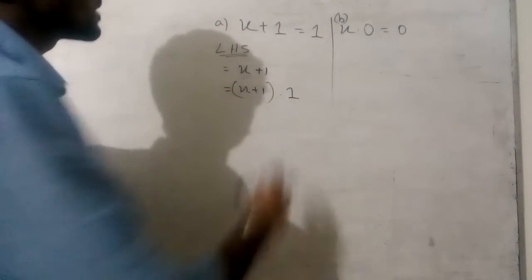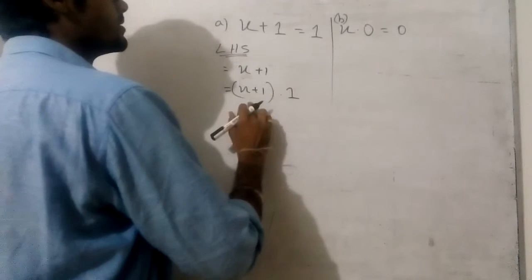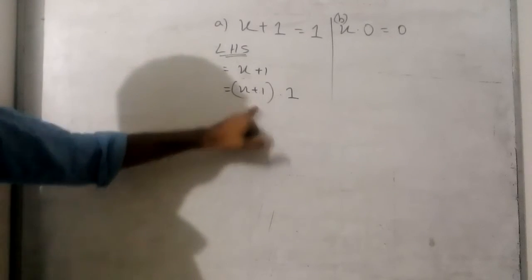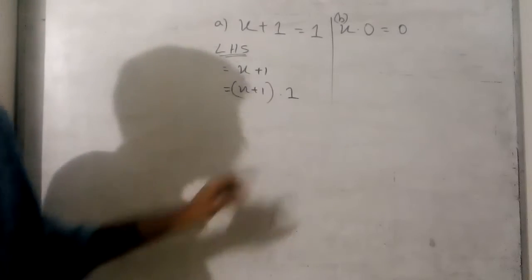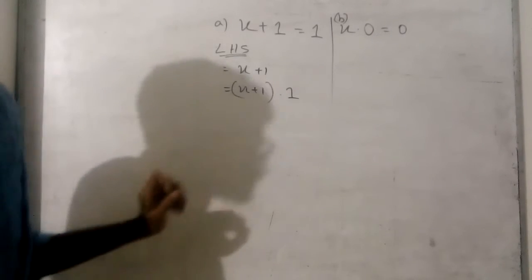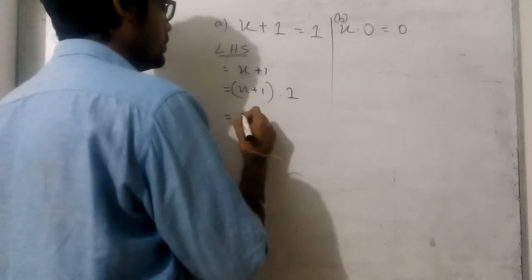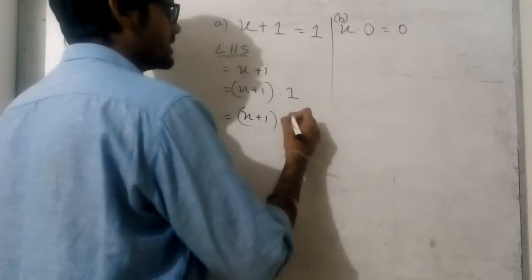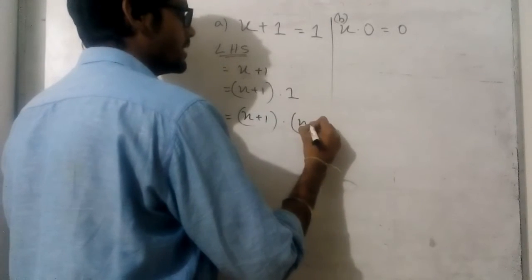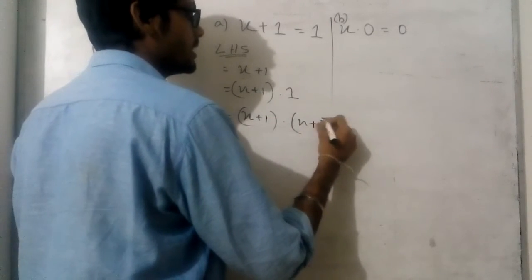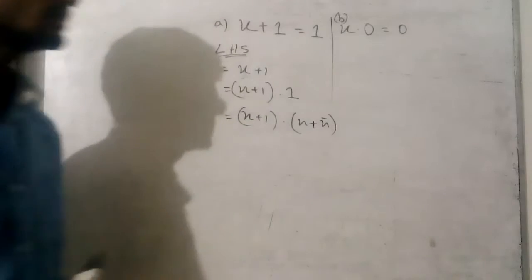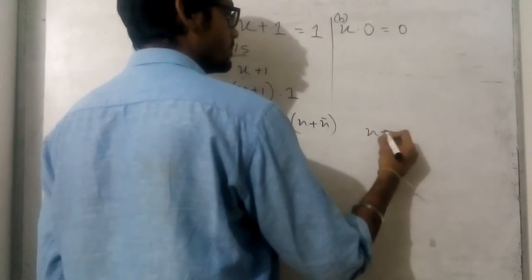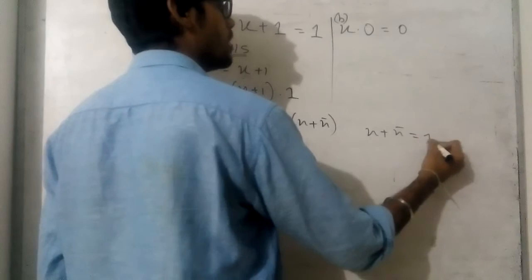So we can write, because this into this equals this value. We can write into 1, then x plus x bar. Because we know that x plus x bar equals 1.